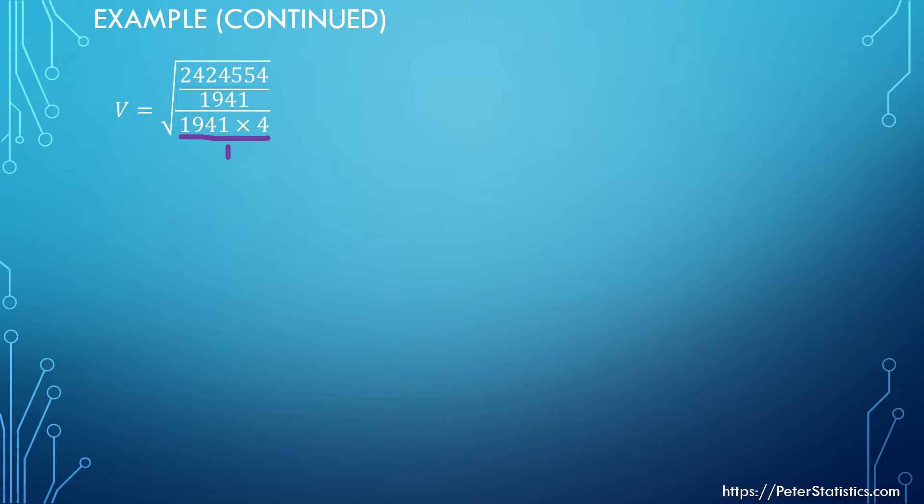Normally if you have a fraction within a fraction, you can think of the bottom one as divided by one, then say this one times that one divided by that one times that one. That gives you in this case 2424554 times 1, so that's simply this one. As you can see, I multiply this with that 1941, and that's done up here. That's the first step.